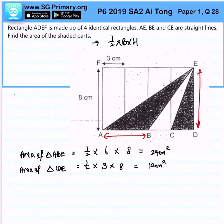And therefore, the area of the shaded part will be 24 cm² plus 12 cm². All in all, we should get the answer of 36 cm². Okay, that is the solution of this answer.